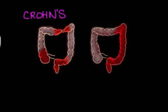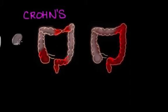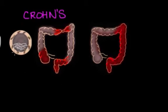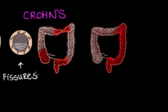Crohn's most often causes inflammation at the end of the small intestine, called the ileum, and the beginning part of the large intestine. There can also be normal healthy bowel tissue in between patches of inflamed bowel tissue — that's one of the tell-tale signs. And the entire thickness, or all layers of the intestine, are affected by the formation of fissures, or tiny tears in the tissue, which forms a cobblestone-like appearance.